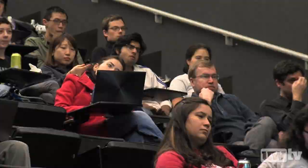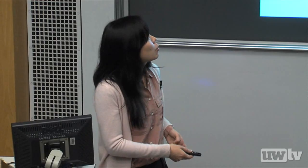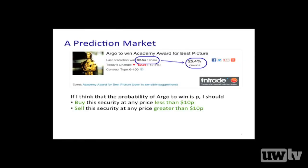If I'm a trader and my belief that Argo will win is P, I should buy this security at any price less than 10 times P — that's the expected value at my belief — and sell at any price greater than 10 times P. If everyone is doing this, in some sense the market price reflects collective intelligence about how likely the event is to happen. The prices of contracts can be mapped to probabilities, and the current price measures the population's collective belief. Anyone who disagrees can come to the market and buy or sell to change the price.